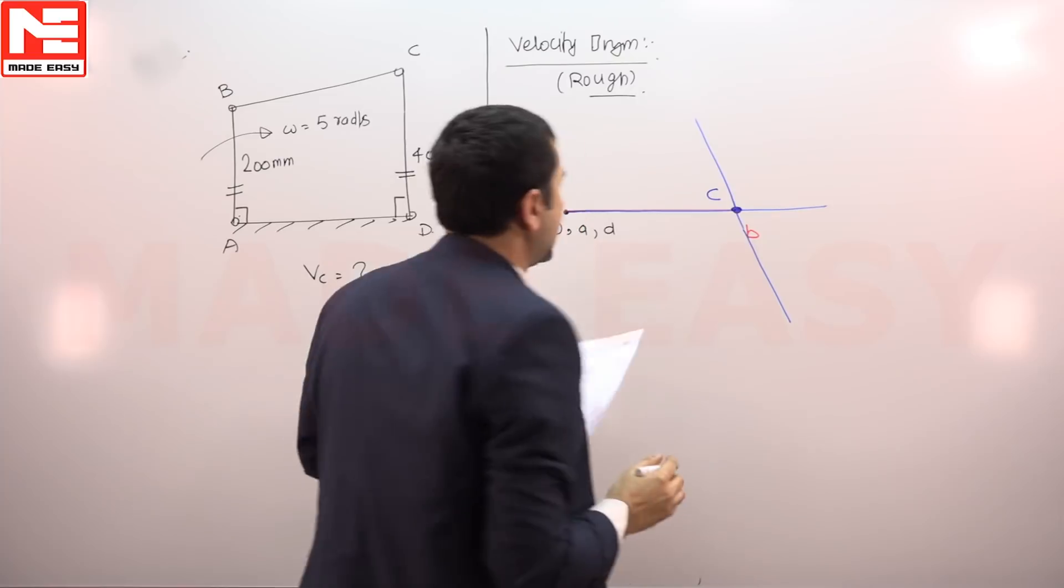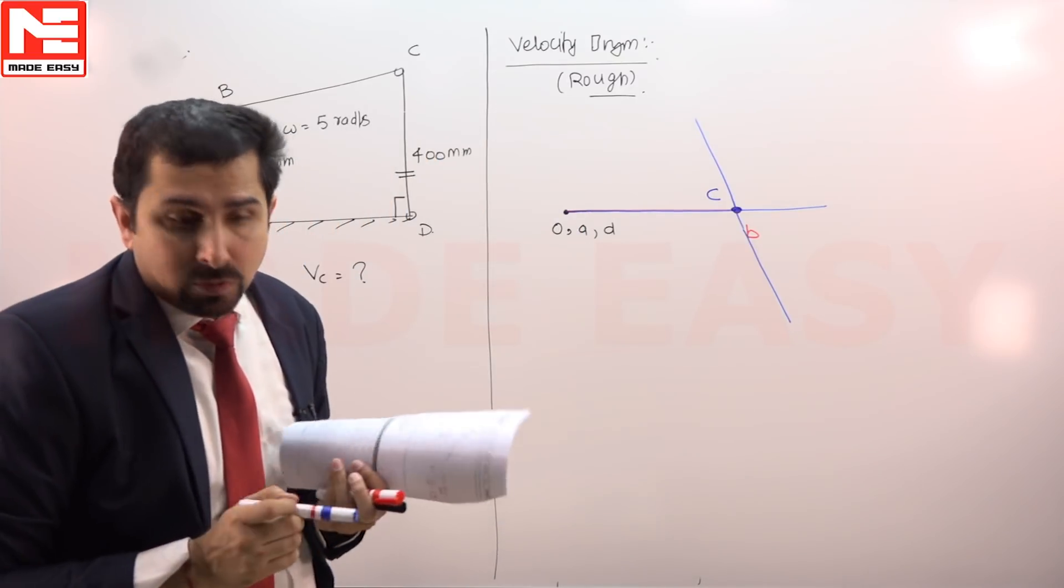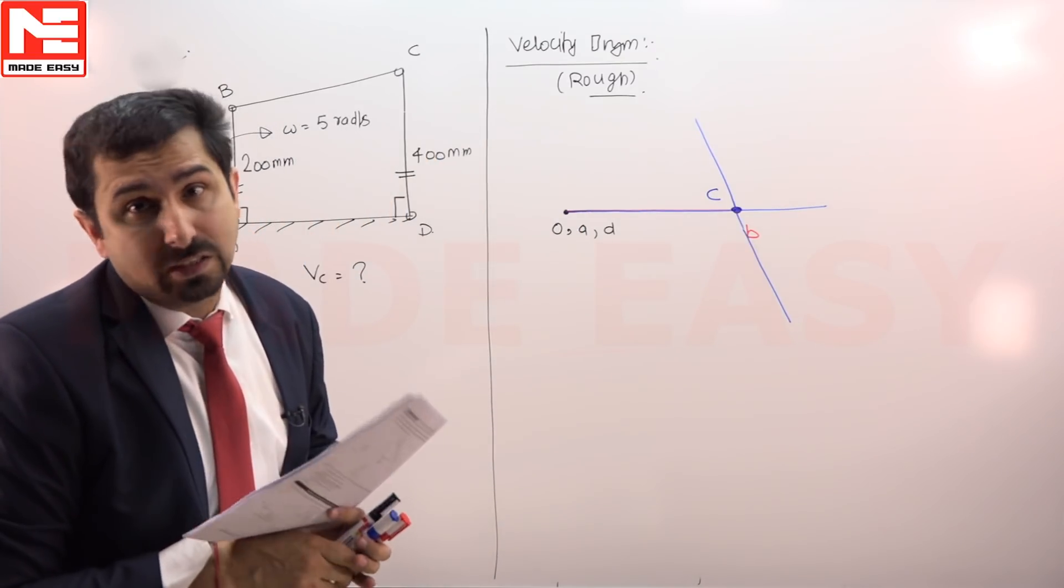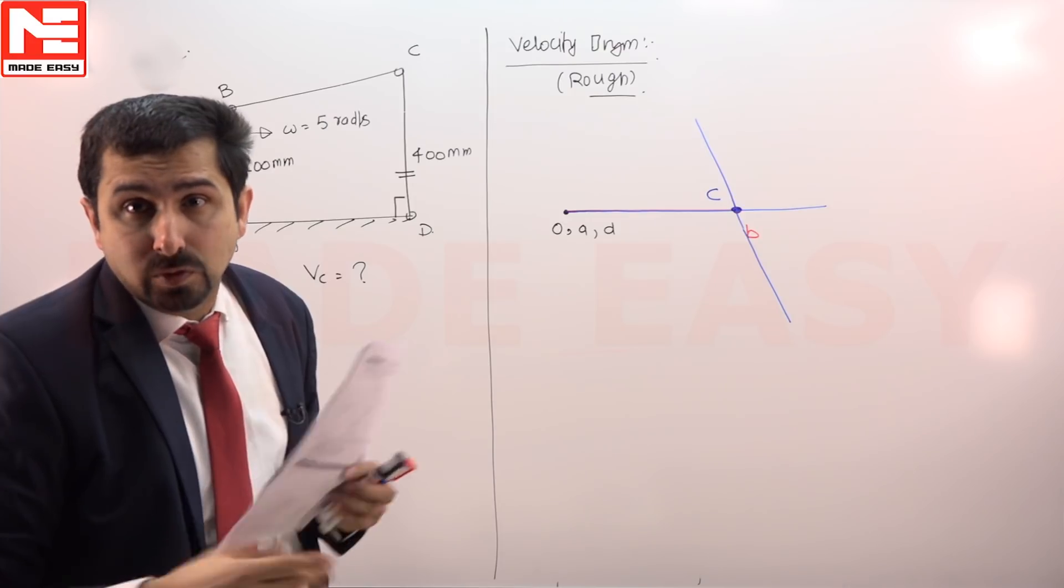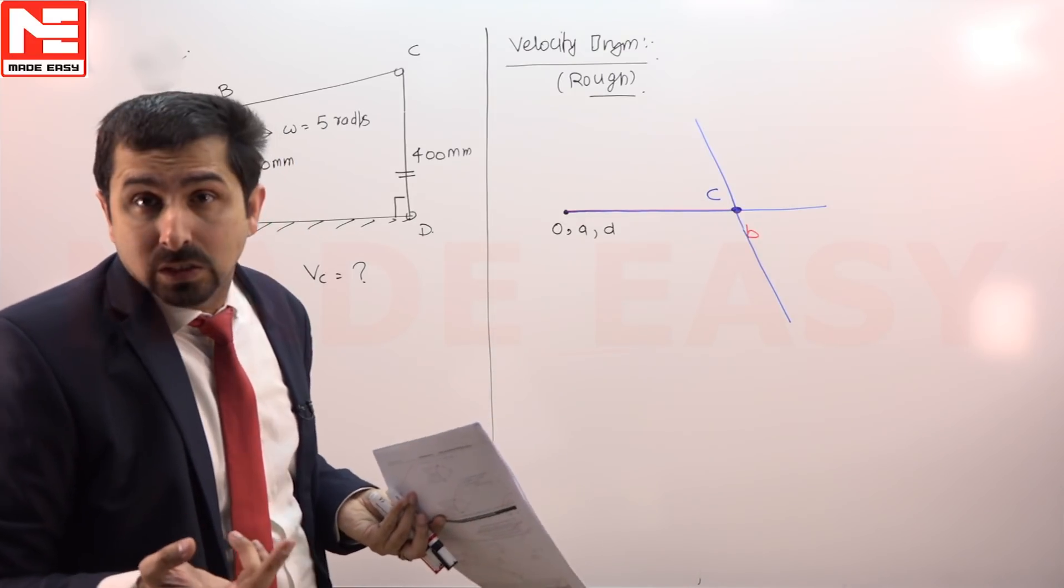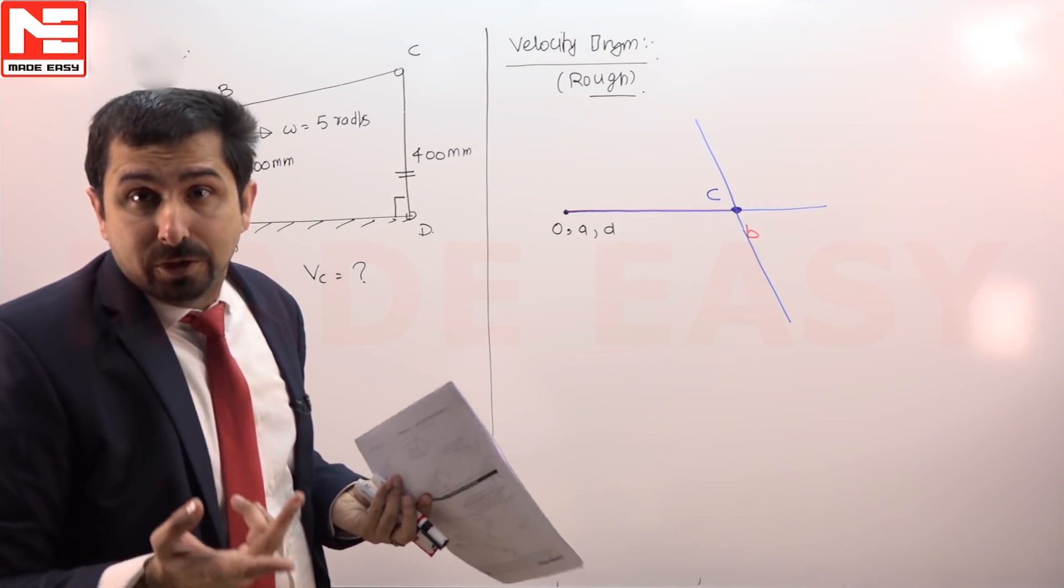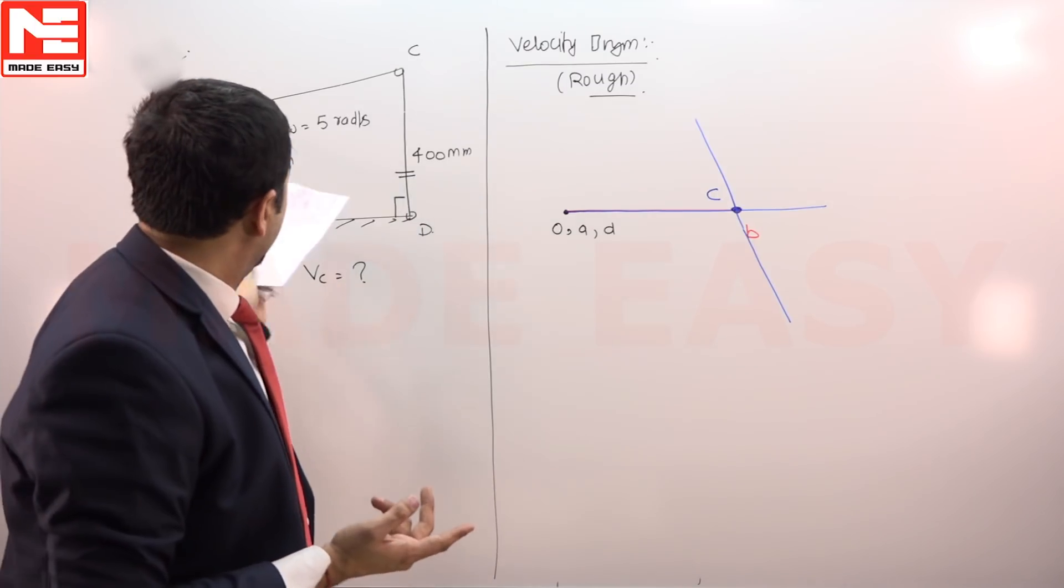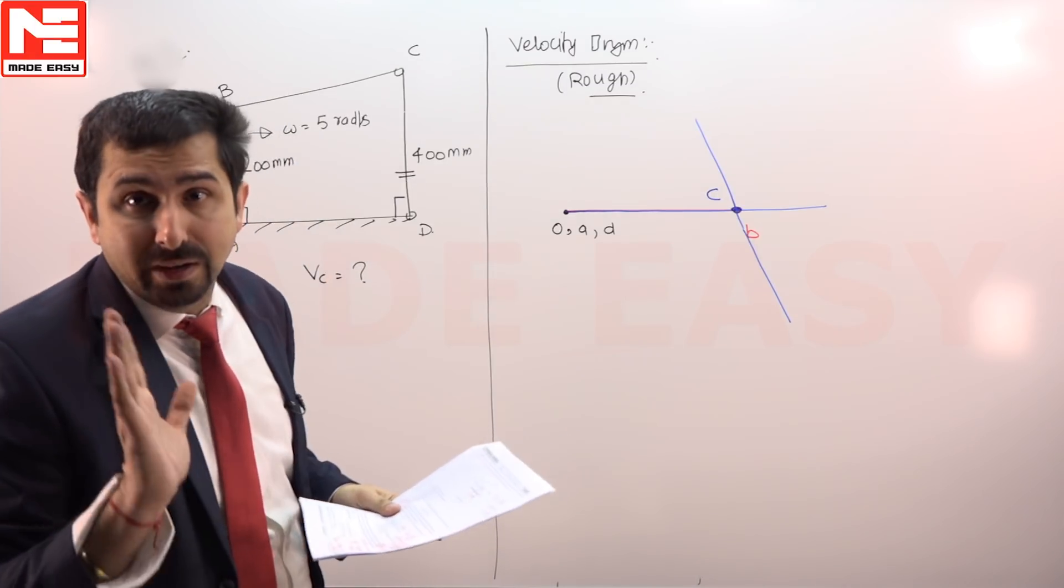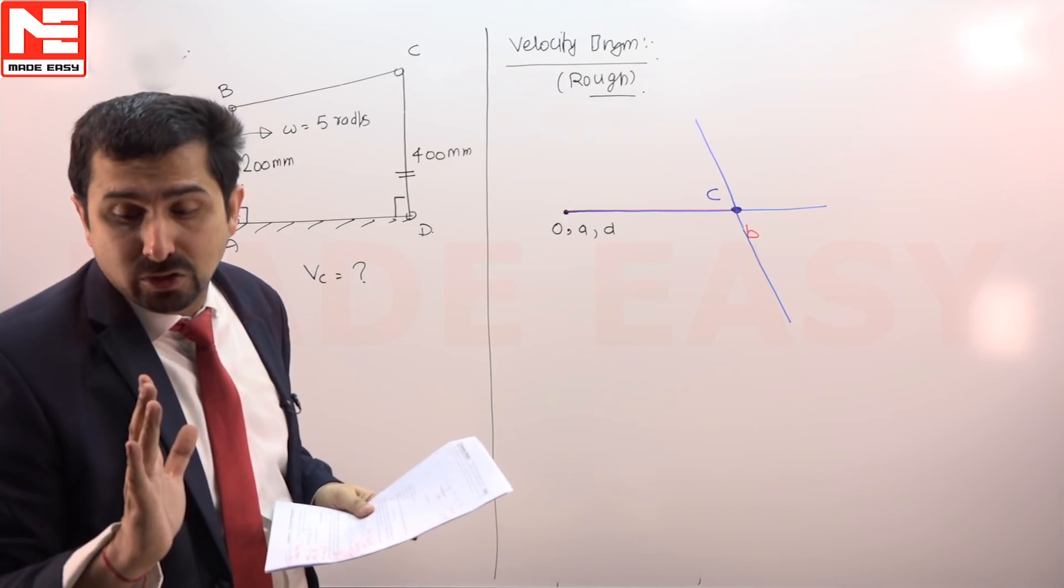Therefore, C will come exactly where B is. So the velocity diagram for this configuration at this moment is a straight line, just because at this moment both of these links are parallel. If both are not parallel, probably we will be having a velocity diagram that is a triangle, but here we are getting a straight line.